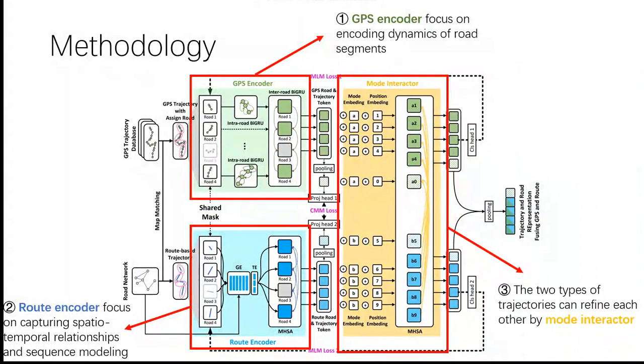The representations from these two modalities are fed into a shared transformer for intermodal information interaction. Eventually, we design three self-supervised tasks to train the model.